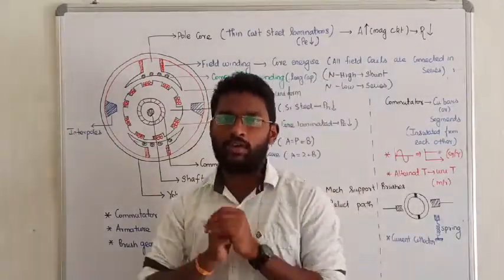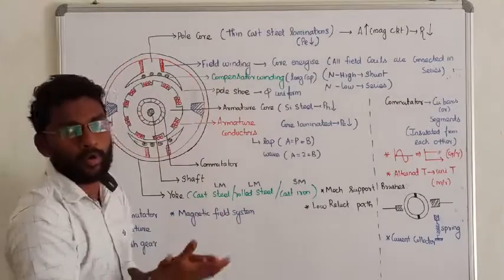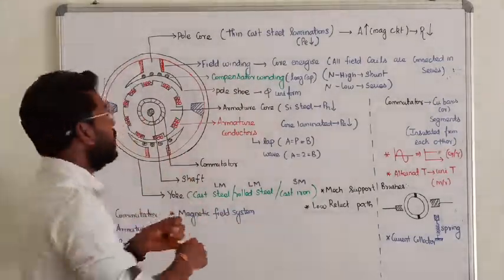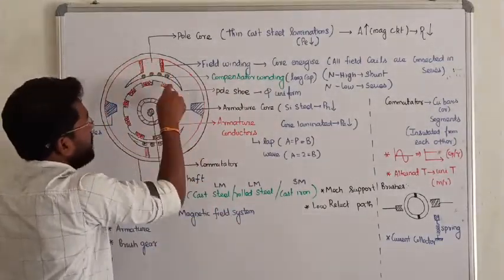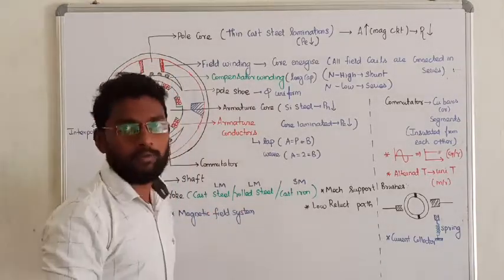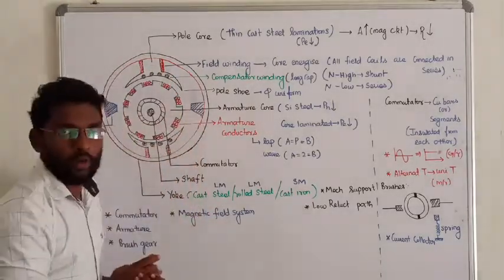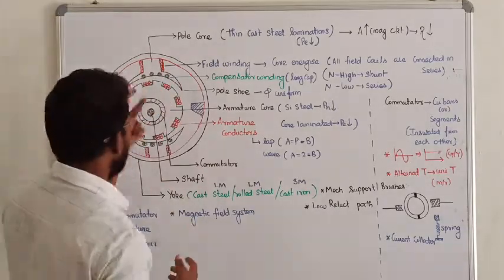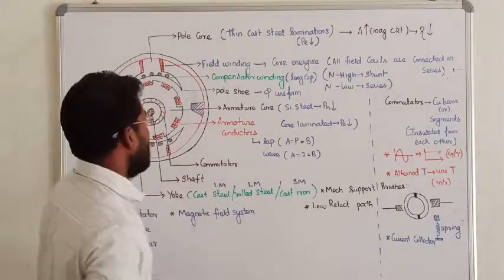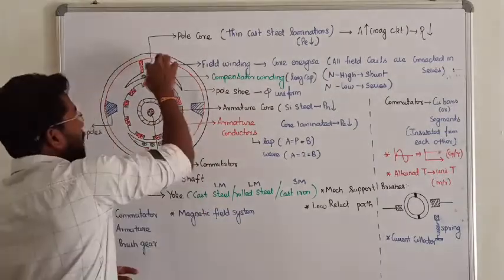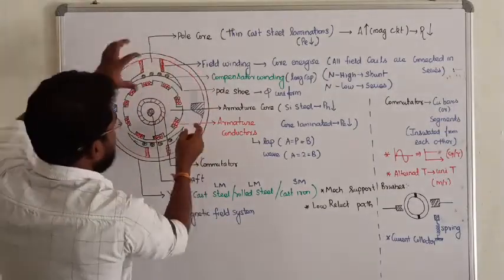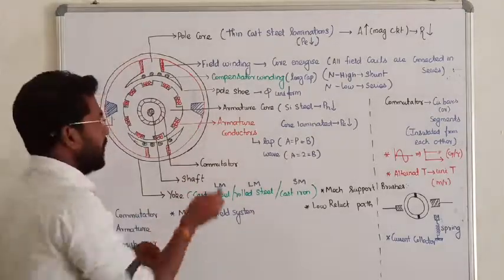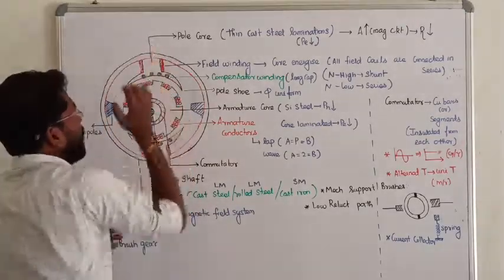Next, we need to talk about the poles. There are two types of poles. One is called the inter pole and the other is called the main pole. The inter pole is smaller in size than the main pole. The main pole is usually larger than the inter pole. You will see the purpose of the inter pole later on. First, I will talk about the main pole.